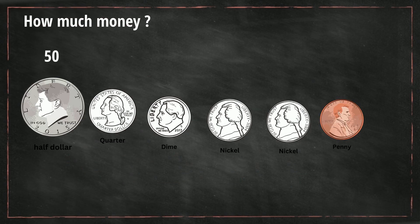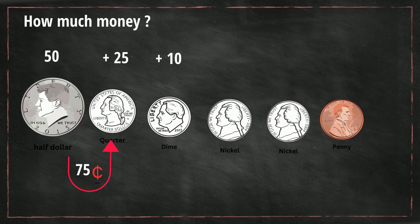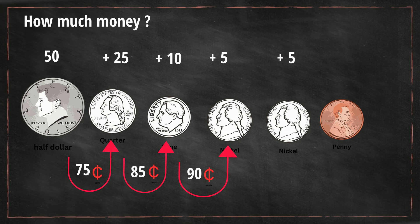We have a half dollar which represents 50 cents, and we're going to add that to a quarter which is 25 cents, so that makes it 75 cents. Then we have another dime and that makes it 85 cents. And then a nickel which represents 5 cents, so now we have 90 cents. Then another nickel, so 95 cents. And then the penny makes it 96 cents.